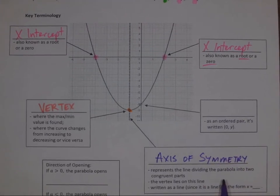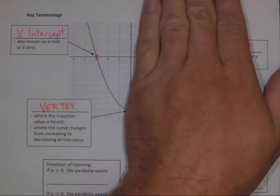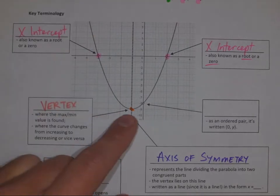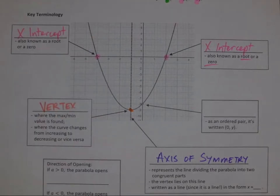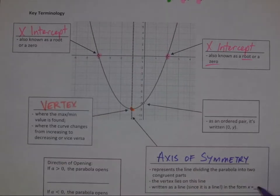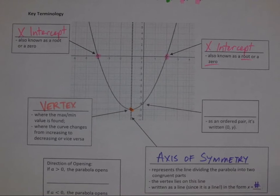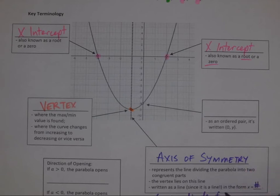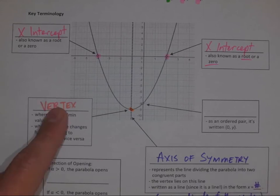The axis of symmetry is where the parabola is divided into two congruent parts — the left side is a mirror of the right side, and the vertex lies on this line. It's written as a dotted line, and x equals a specific number — specifically, that number is the x-coordinate of the vertex.